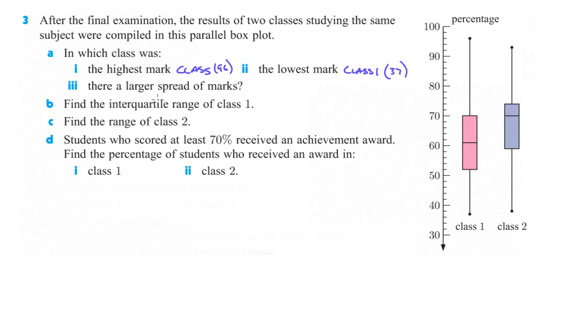Which one has a larger spread of marks? That would be class one as well. Because it looks like the highest and the lowest. And then also, really, your quartile three to quartile one looks bigger than this quartile three to quartile one. So, bigger spread of marks, as they call it, would be class one.